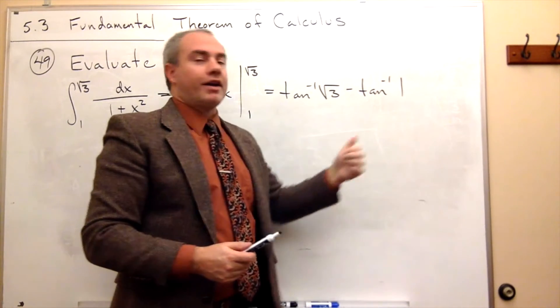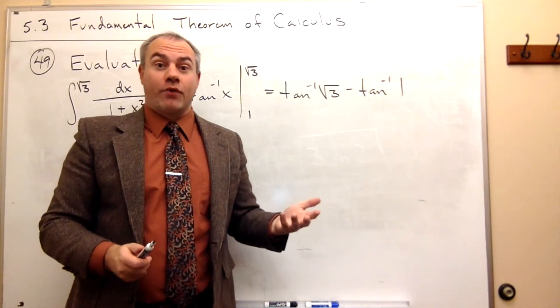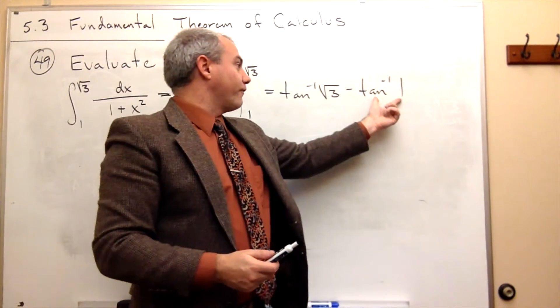This one I know off the top of my head, tan inverse of 1. Whose tangent is 1? Well, pi over 4, right? So this guy's pi over 4.